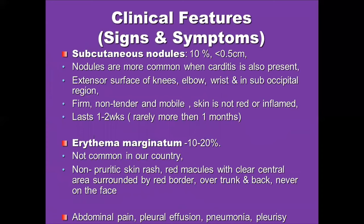Subcutaneous nodules are present usually over the extensor surfaces of the knees, elbows, and wrists, and in the suboccipital region. Nodules are more common when carditis is also present. They are firm, non-tender, and mobile, with the overlying skin not inflamed, and usually last one to two weeks, rarely more than one month.